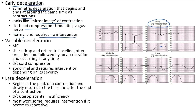Variable deceleration is the most common abnormal deceleration. It is a sharp drop and return to baseline often preceded and followed by an acceleration. It can occur at any time with no relation to uterine contractions. It is due to cord compression. This picture shows variable deceleration — no relation to uterine contractions, due to cord compression; it is abnormal and requires intervention depending on severity.